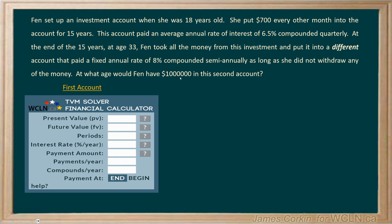First we want to put in our present value of zero, because Fenn is setting up an investment account at age 18 and she's going to start with no money in there. There are two different accounts in this question — we're going to first work out what happens in the first account, and then take that amount and put it into the second account.